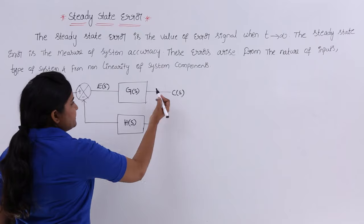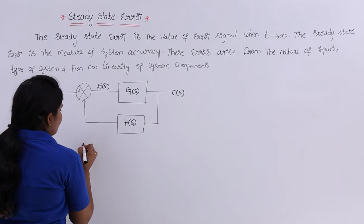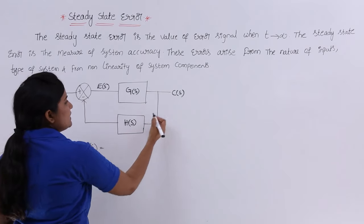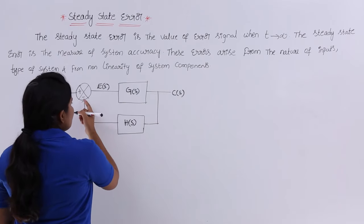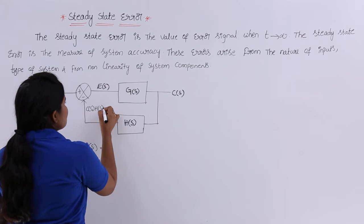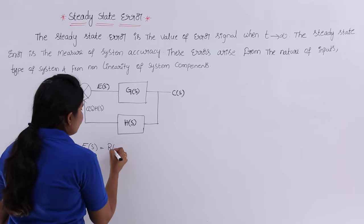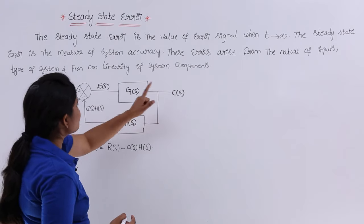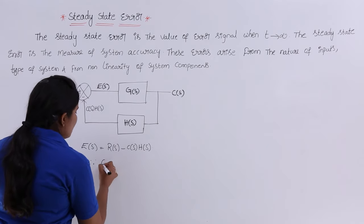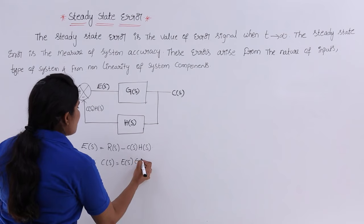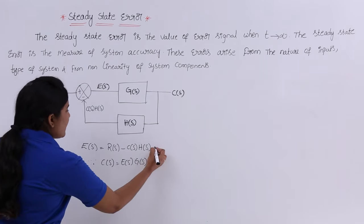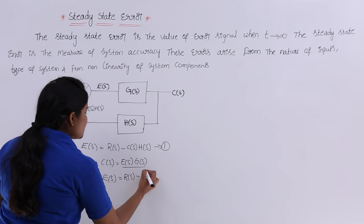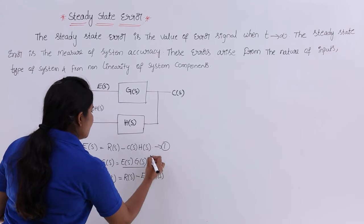If you observe, E(s) equals R(s) minus the feedback signal. The feedback signal is C(s) into H(s). So E(s) = R(s) − C(s)·H(s). Since C(s) = E(s)·G(s), I am going to substitute this into the equation, giving E(s) = R(s) − E(s)·G(s)·H(s).